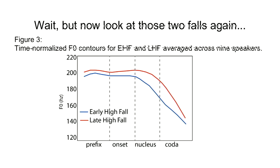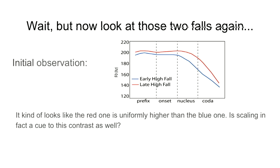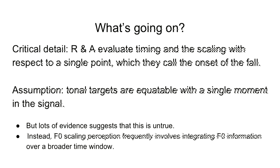But if you blow up that picture and look at just the early high fall and the late high fall, there is indeed a timing difference — the red line is falling later. But you might also notice that the red one appears higher than the blue one throughout its entire duration. That makes it look like maybe there is some kind of scaling dimension to this contrast. This is not to criticize Romason and Iocar — what they did is absolutely standard operating procedure for an auto-segmental metrical analysis. They measured timing and scaling at the same point, under the assumption that a target for a tone happens at a single moment, with whatever properties it has at that moment.